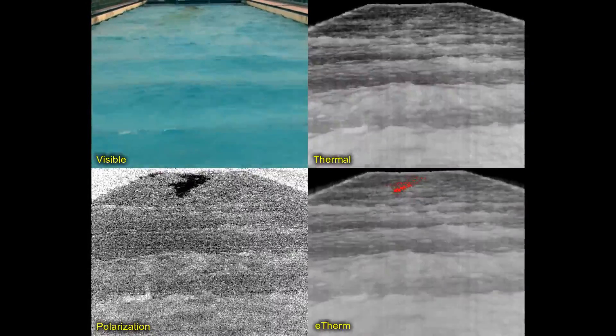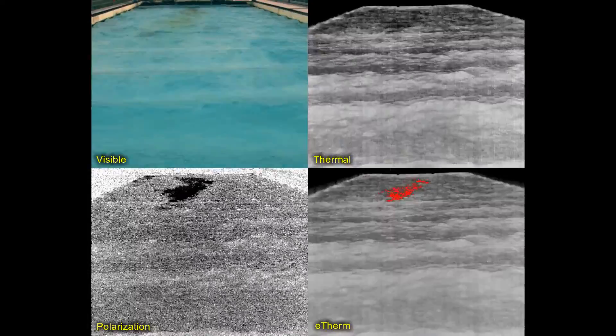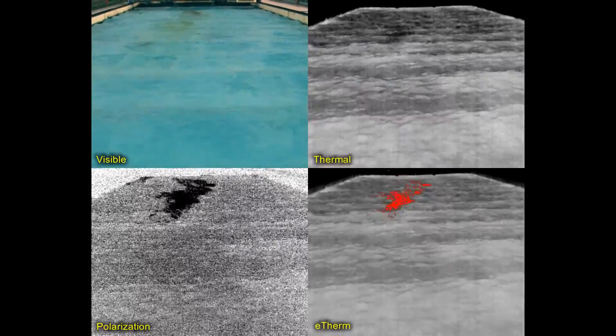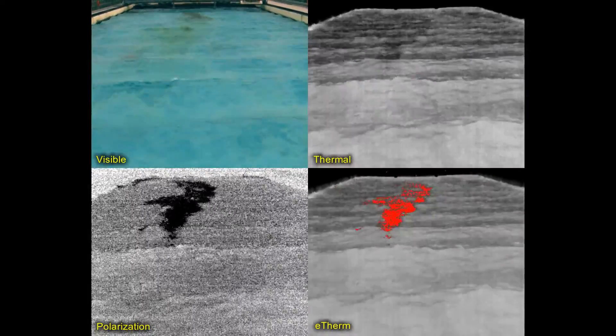Pixis integrates a polarization filter into a thermal camera, offering 100% greater detail and contrast than thermal alone.